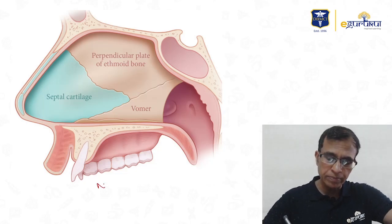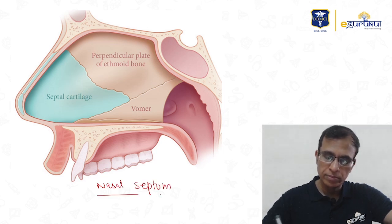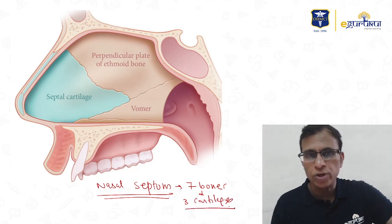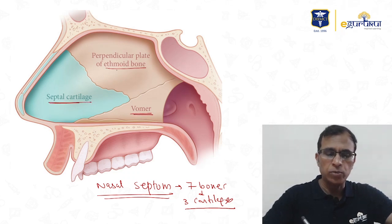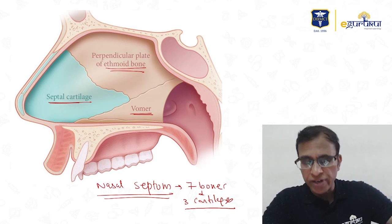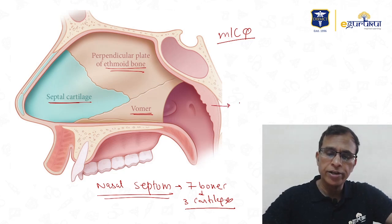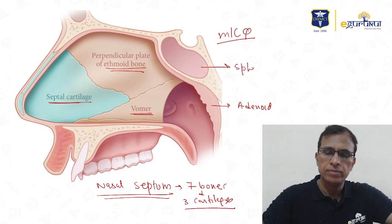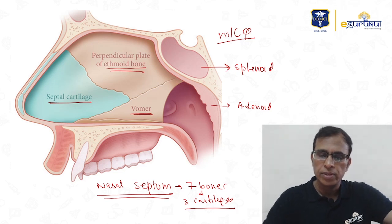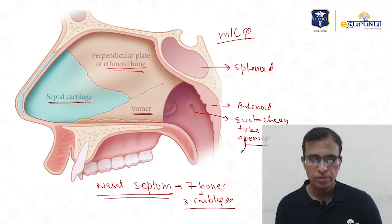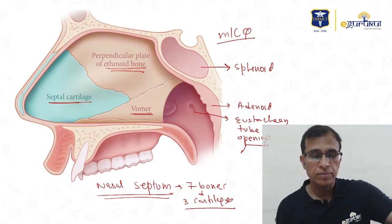Now we come to the nose. This is the nasal septum. The nasal septum has seven bones and three cartilages. You must be able to identify the septal cartilage, the vomer bone, and the ethmoid bone. Also visible are the sphenoid, and the palatine bone. The nasal septum with its main bones and cartilages is a very important MCQ topic.